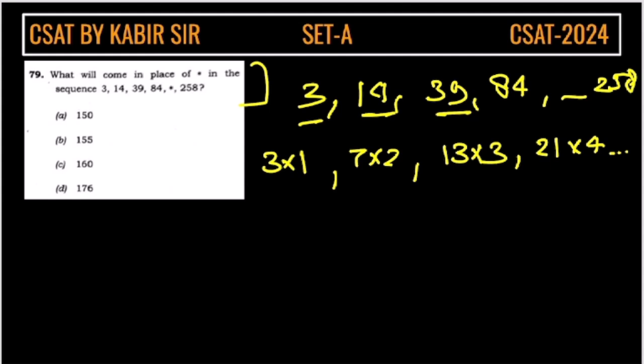So, this is 1, 2, 3, 4, next will be 5 we know that. So, what will come here? This will be here is 3 then we are getting 7.